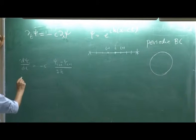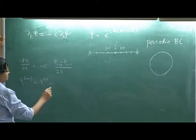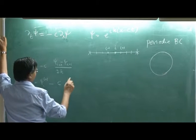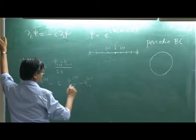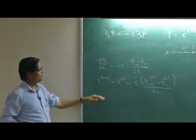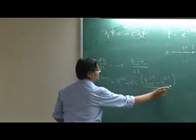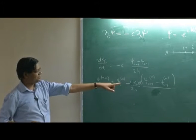Now I time step. So psi i n plus 1 is psi i n minus c times psi i plus 1 n minus psi i minus 1 n by 2h times delta t. That is Euler explicit scheme.